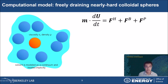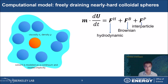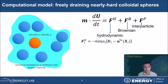We built a system of freely draining, nearly hard Brownian colloidal spheres. Their motion is governed by the Langevin equation, which is a stochastic momentum balance equation. There are three contributions to the force on each particle: the hydrodynamic force, Brownian force, and the interparticle force. The freely draining limit neglects many-body hydrodynamic interactions, which is a reasonable approximation when the repulsion range between particles keeps their no-slip surfaces separated by at least 20% of their particle sizes. The hydrodynamic force is then simplified to the Stokes drag law, where i is the radius of particle i, big Ui is the particle velocity, and U-infinity is the fluid velocity.